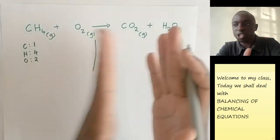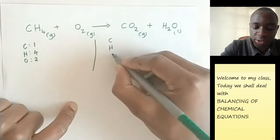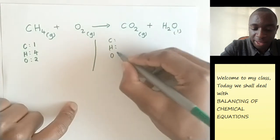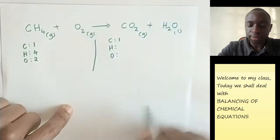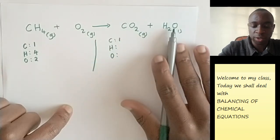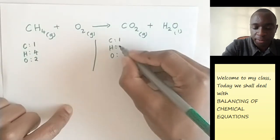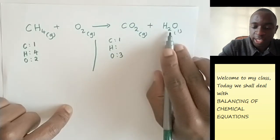Now, when we shift to this other side, which is the product side, we still have carbon, hydrogen, and oxygen. But the numbers are a little bit different. Carbon is one. Oxygen are one, two, plus one, which is two plus one, is three. So that is oxygen is three. And hydrogen is just two.